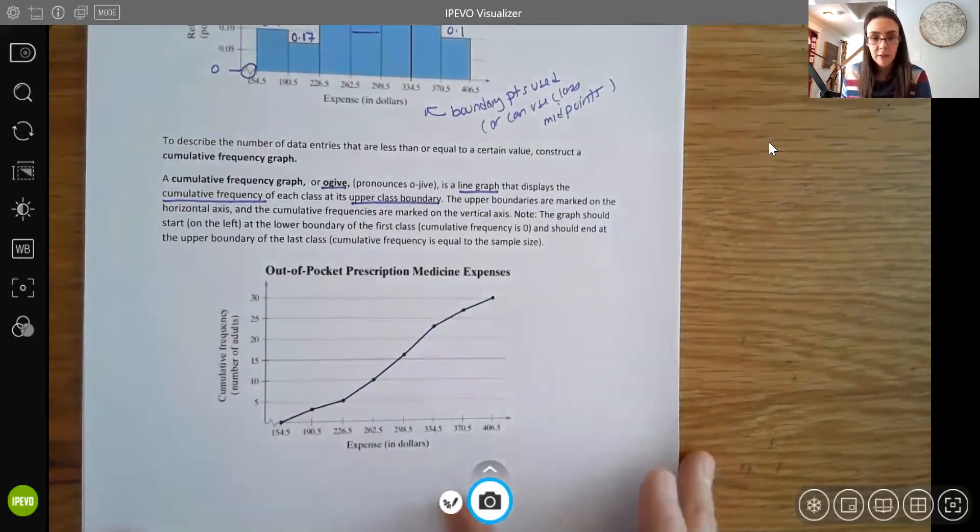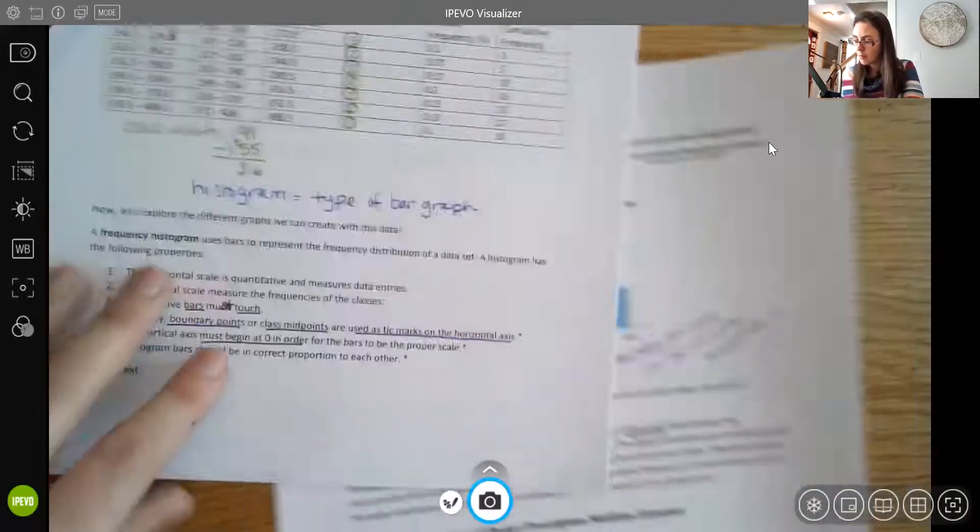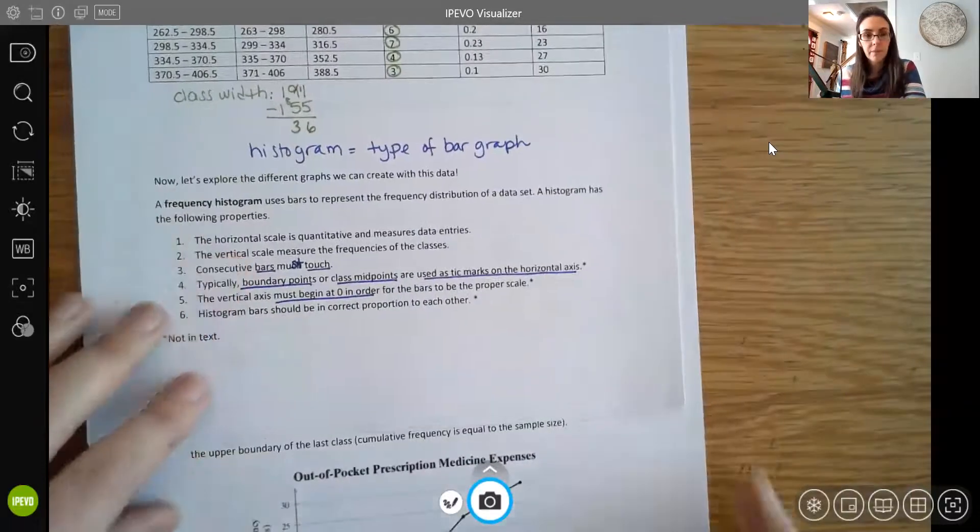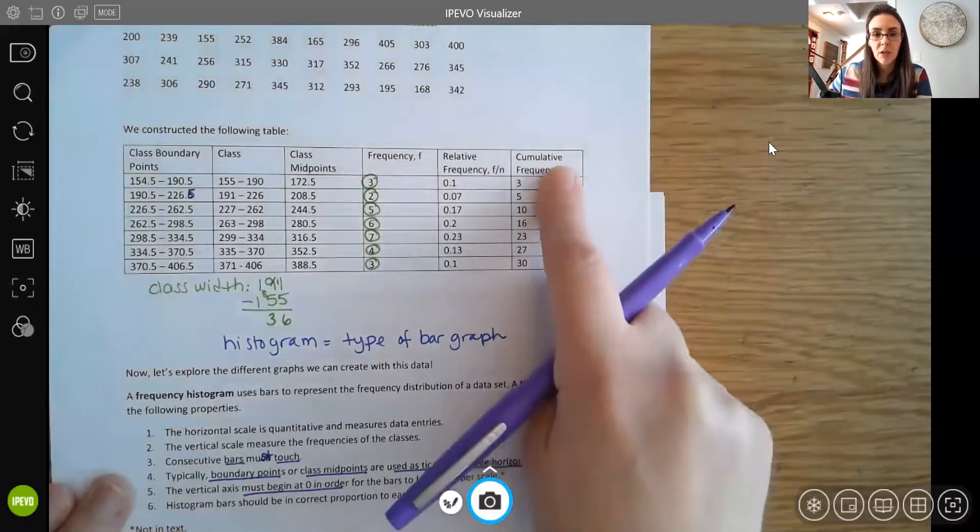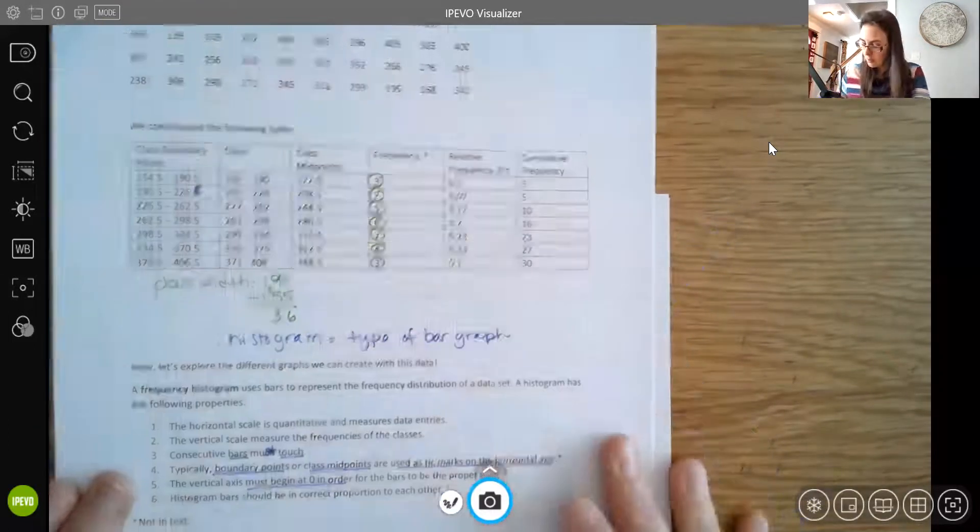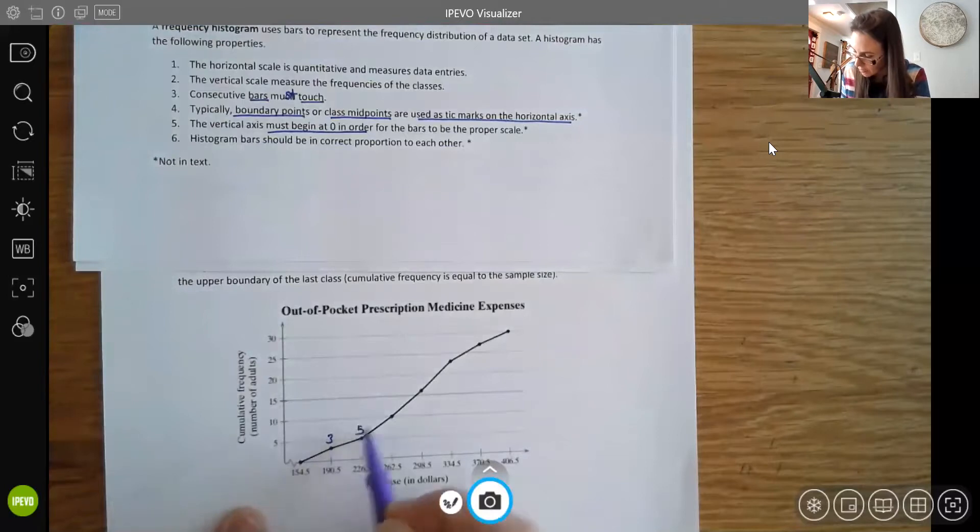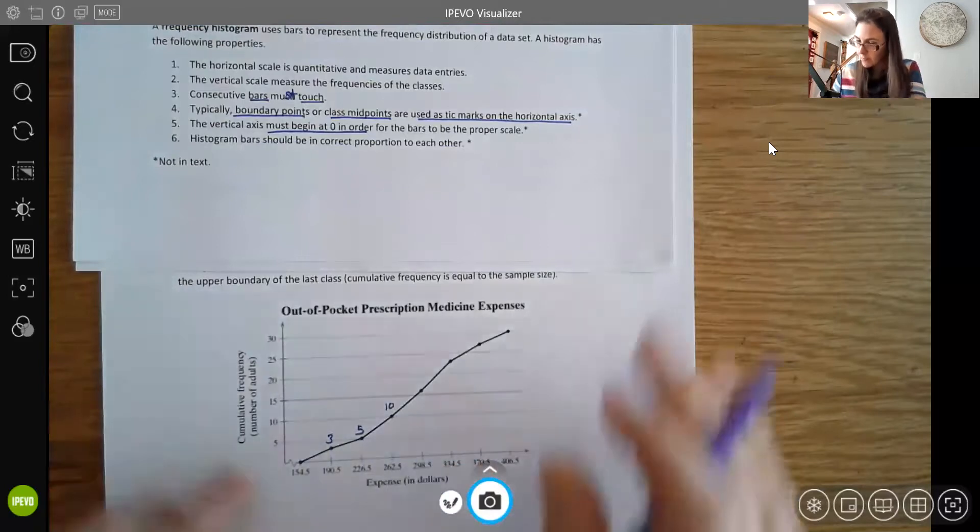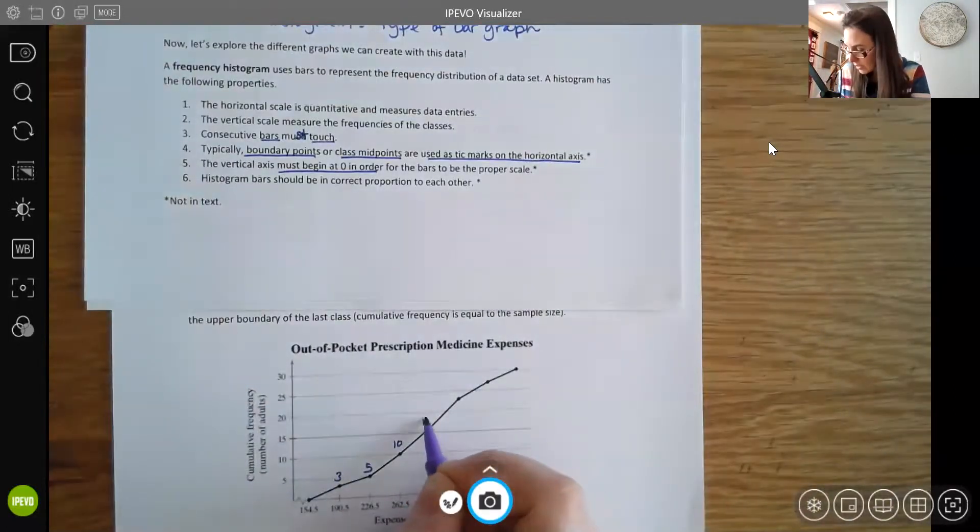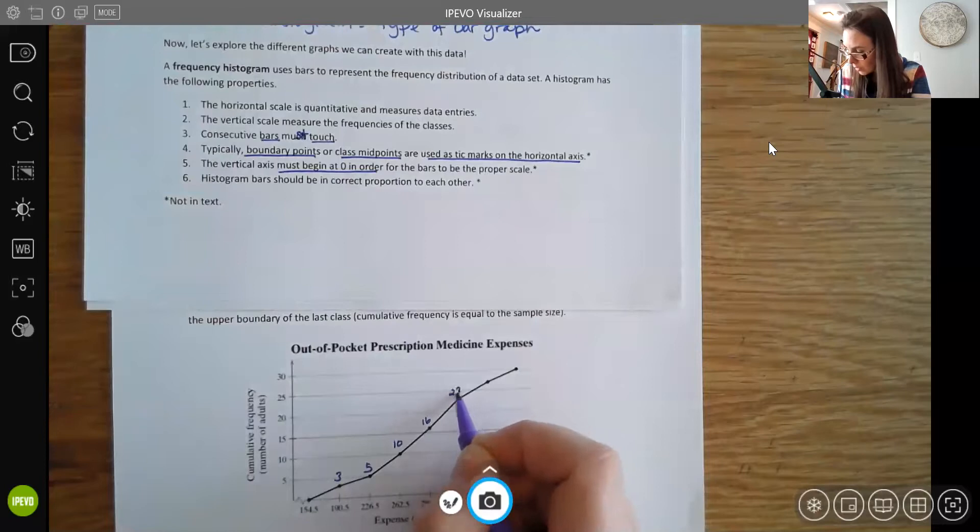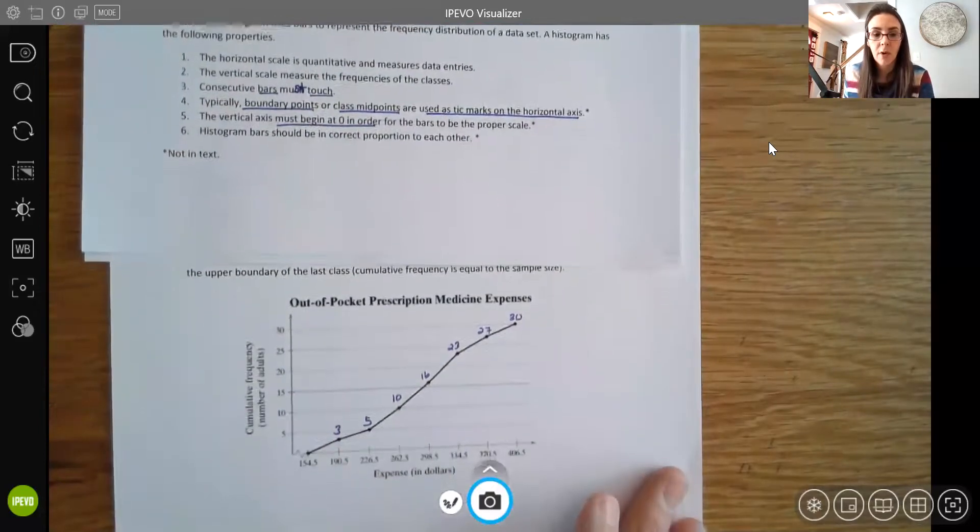So I'll show you first those cumulative frequencies, and I want to see that they match. So I have 3, 5, 10. If I look here, here's the 3. We can see this is right at the 5. That's right on the 10. And then I had 16, 23, 27. So here's the height of 16, 23, 27. And then the final height was 30. So those do match our cumulative values that we already found.